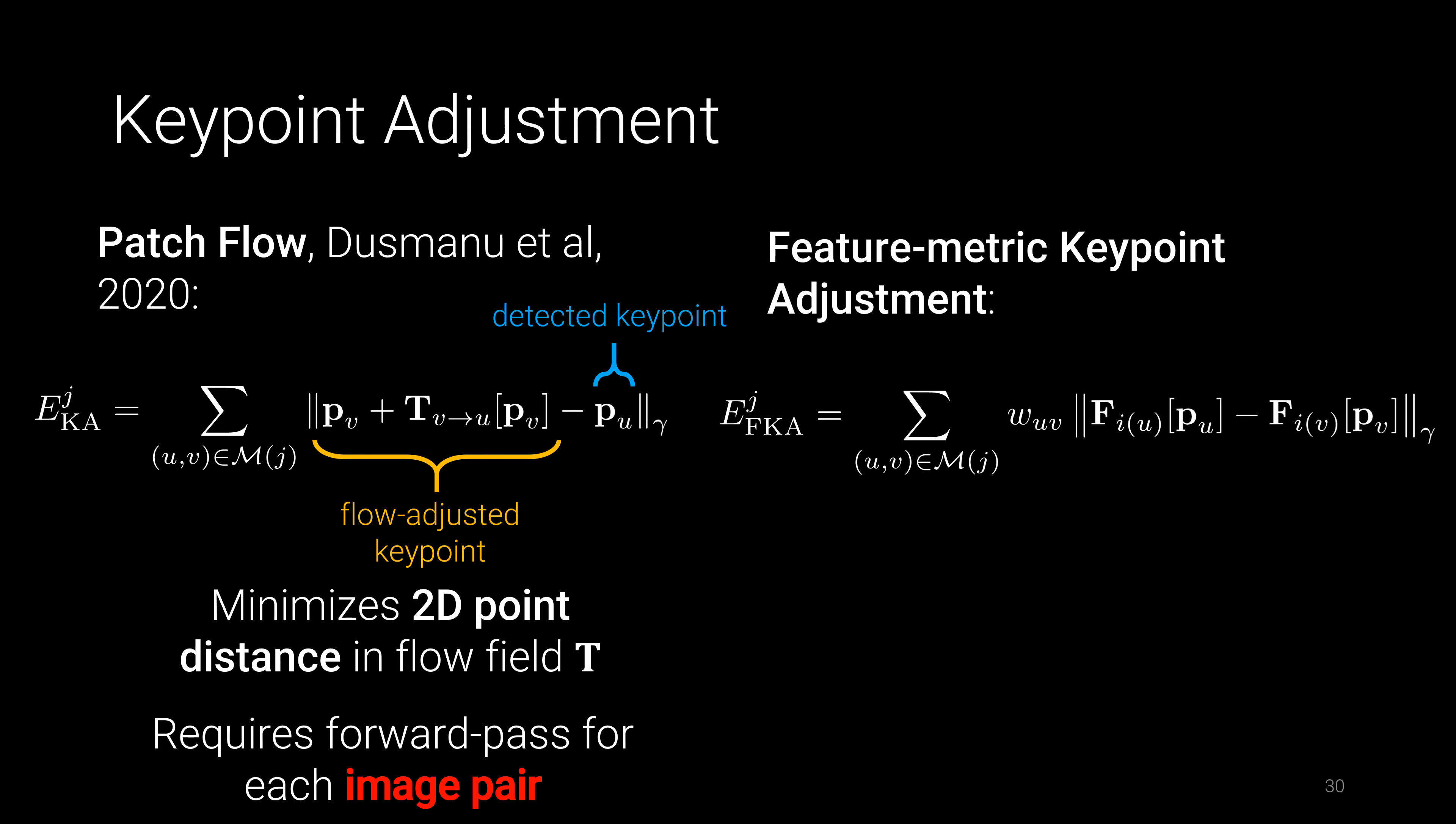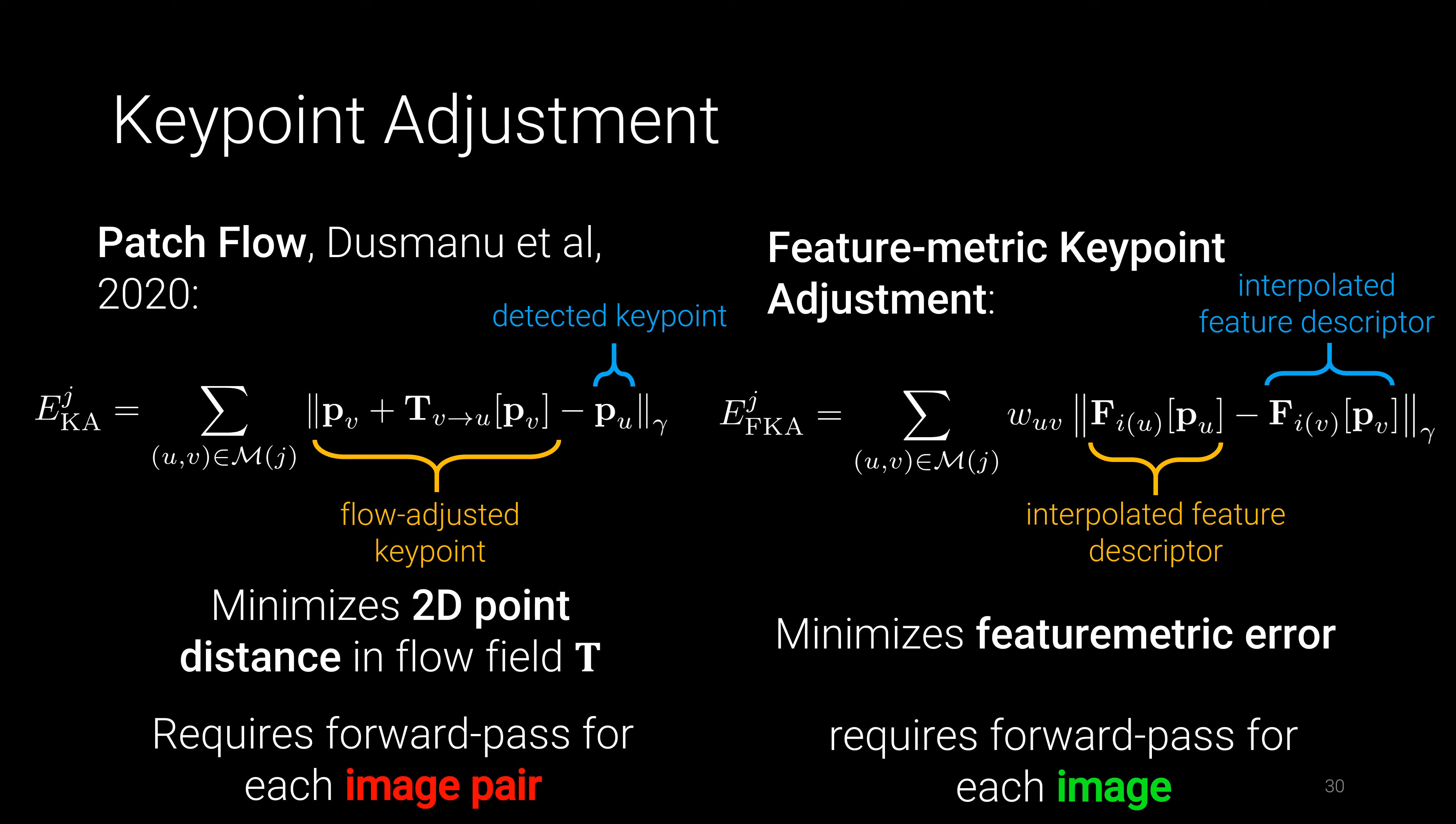Our featuremetric keypoint adjustment directly minimizes the difference between interpolated descriptors at keypoint locations. In contrast to patch flow, the gradients in the deep features implicitly define a flow field, and we therefore only need one forward pass for each image. In practice, we take the keypoints of a matched track and build a graph with edges weighted by the matching score.